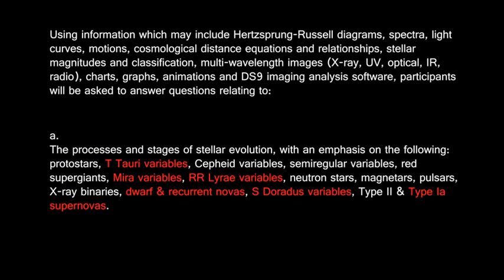The words in red are the content that is new this year and different from last year. If you have been doing this competition for the past two years, you will see that what is new this year was part of the event in 2012. In 2012 we had Stellar Evolution and Type Ia Supernovas; in 2013, Stellar Evolution and Type II Supernovas; and in 2014, Stellar Evolution and Variable Stars. A lot of the stellar evolution stages and some variable stars were covered in those prior years, so much of the new content is actually material you already know.